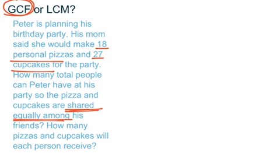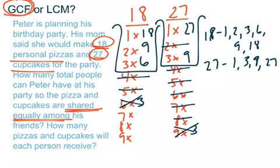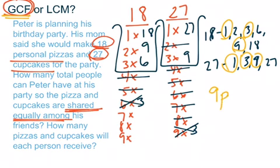We're going to find the factors of 18 and 27 using the nines method. Going through and comparing the lists, I see that 1, 3, and 9 are common factors. Because we're using GCF — greatest common factor — and the problem says 'shared equally,' the greatest common factor is 9, meaning Peter can invite 9 people to his party.